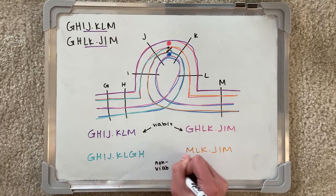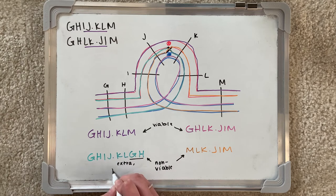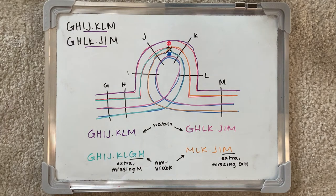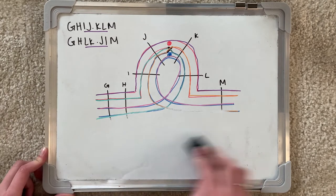Thus, both of these jellyfish gametes would be non-viable, while the purple and pink gametes would be viable. Even though the pink still contains an inversion, it has all of the genetic information it needs to function properly.